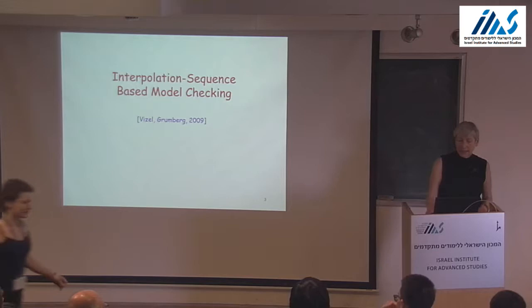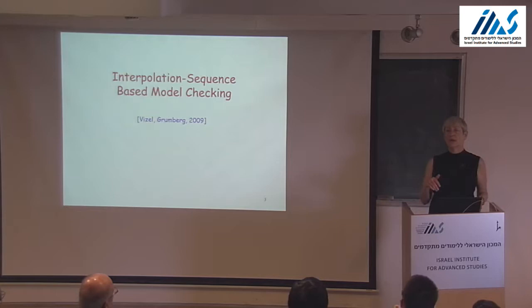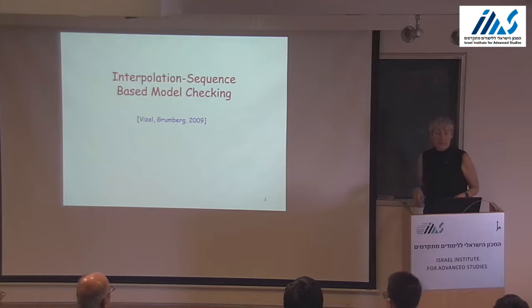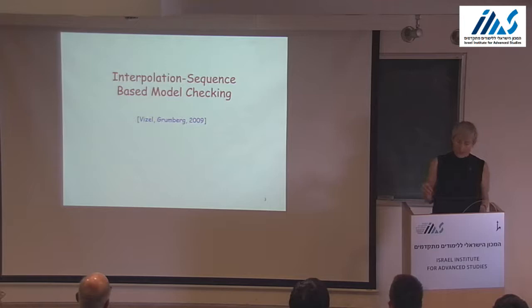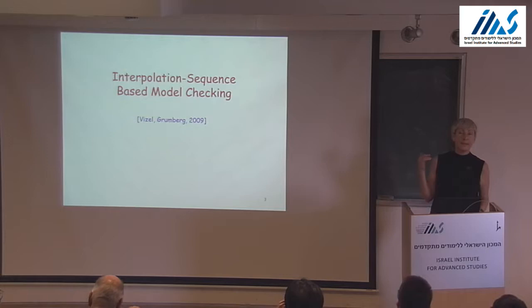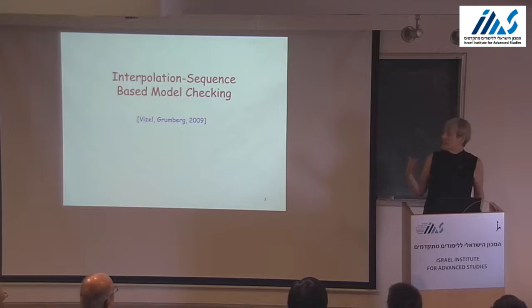We continue with model checking — symbolic model checking — and I'd like to show how to do verification with SAT-based model checking. Yesterday we saw how to use bounded model checking with SAT, and what we could achieve was falsification but not verification. We could find bugs but we couldn't conclude that no bug appeared in the system. Today I will show a specific solution using interpolation sequences, and I'll also go back to the original work by McMillan that introduced interpolation for obtaining full verification with SAT.